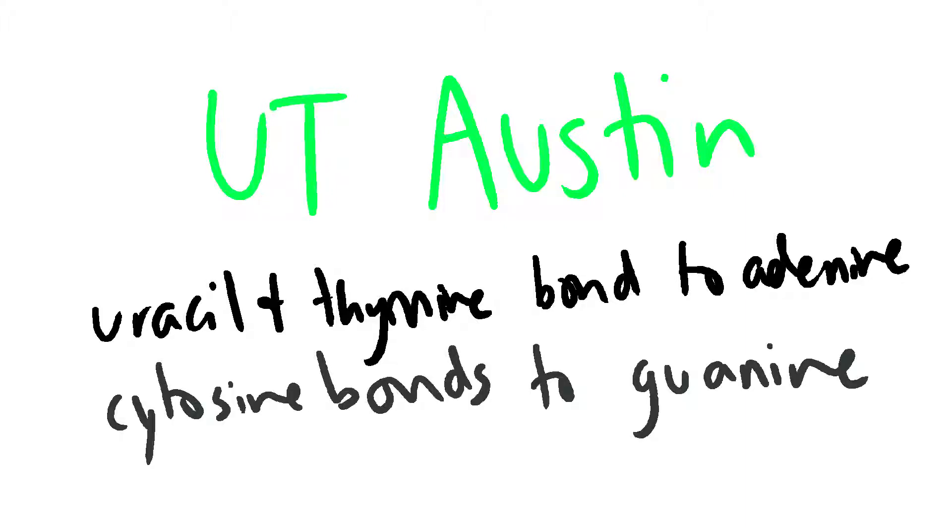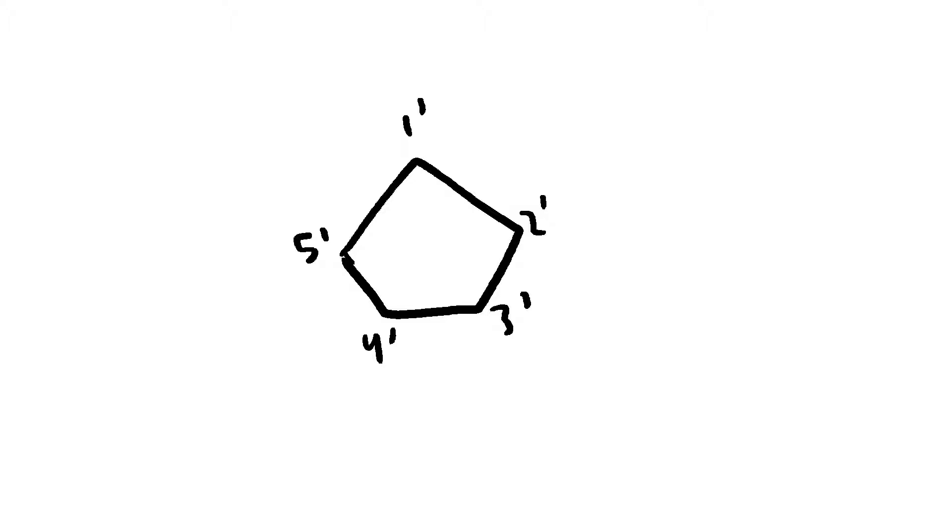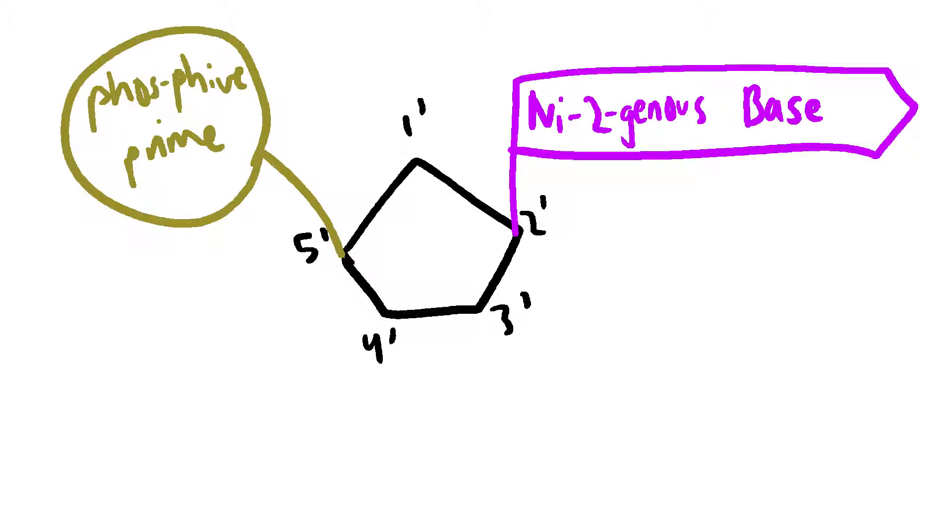To remember where things attach to the sugar of nucleic acid, remember nitrogenous base and Phosph5' since the nitrogenous base is on the 2-carbon of the sugar, while the phosphate is on the 5-prime carbon of the sugar.